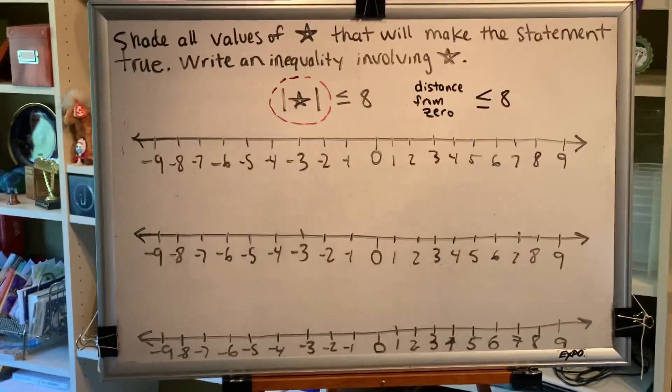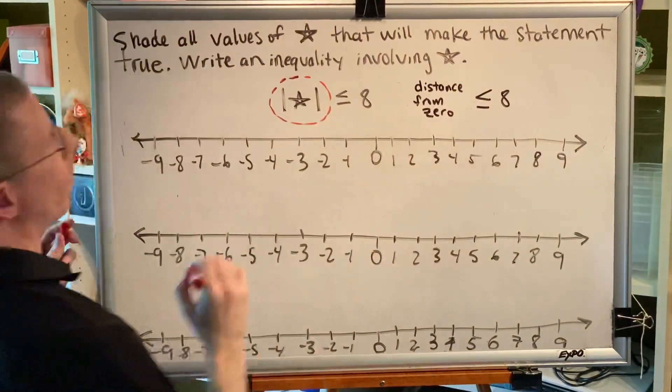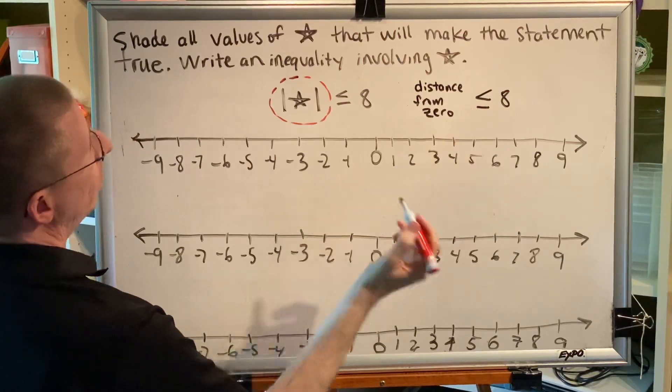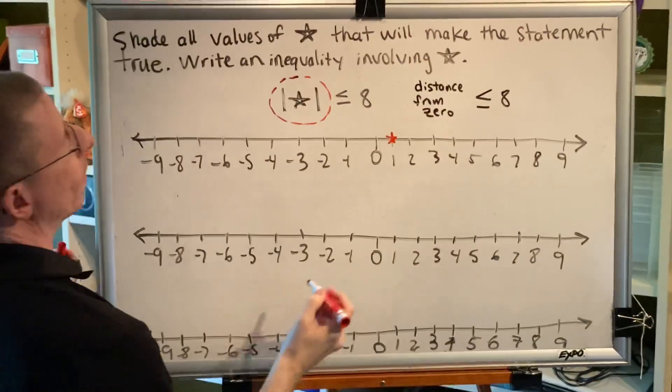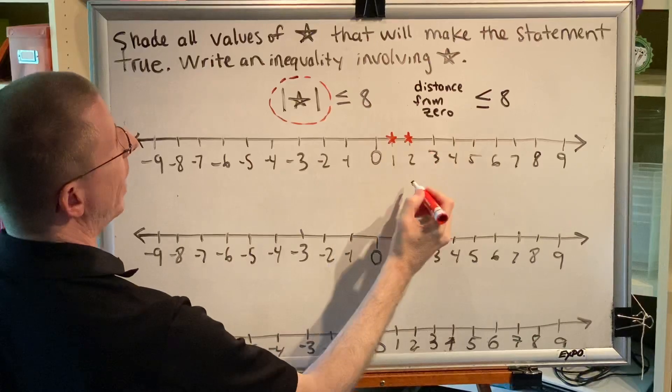Let's see if we can figure out some of those numbers. How far away is 1 from 0? One step. Is that less than or equal to 8? Yes. So could star be here? Absolutely. How about 2? That's 2 steps from 0, which is less than or equal to 8.